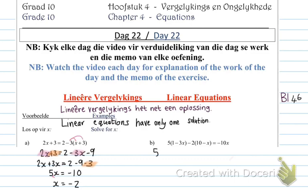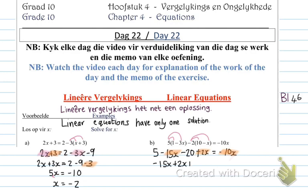Number (b): I multiply in first — 5 times 1 is 5, and 5 times 3x is negative 15x. Then I multiply negative 2 in: negative 2 times 10 is negative 20, and negative 2 times negative x is positive 2x. That equals negative 10x. Again I have x's on both sides, so I take all x's to one side and all numbers to the other: negative 15x plus 2x plus 10x equals 20 minus 5. The negative 20 goes over becoming positive 20, and the 5 goes over becoming negative 5.